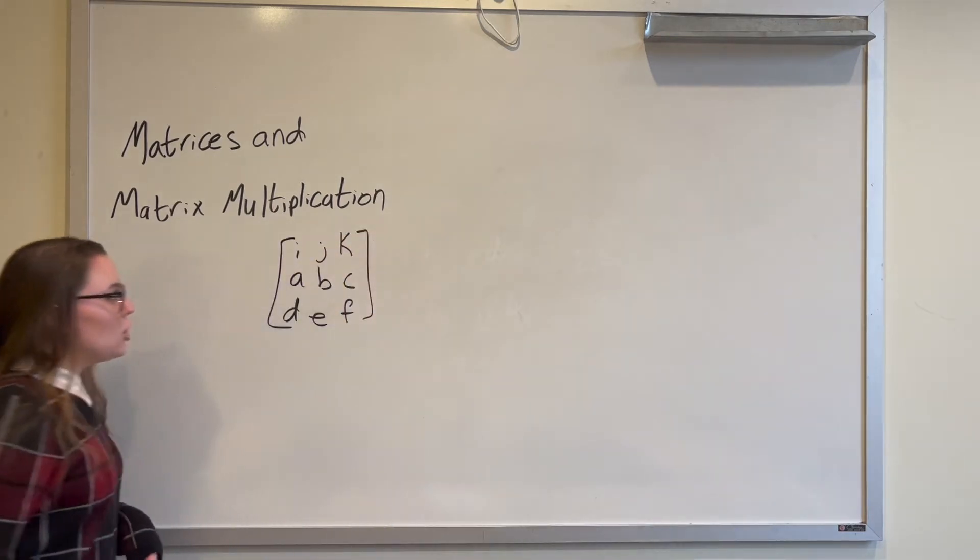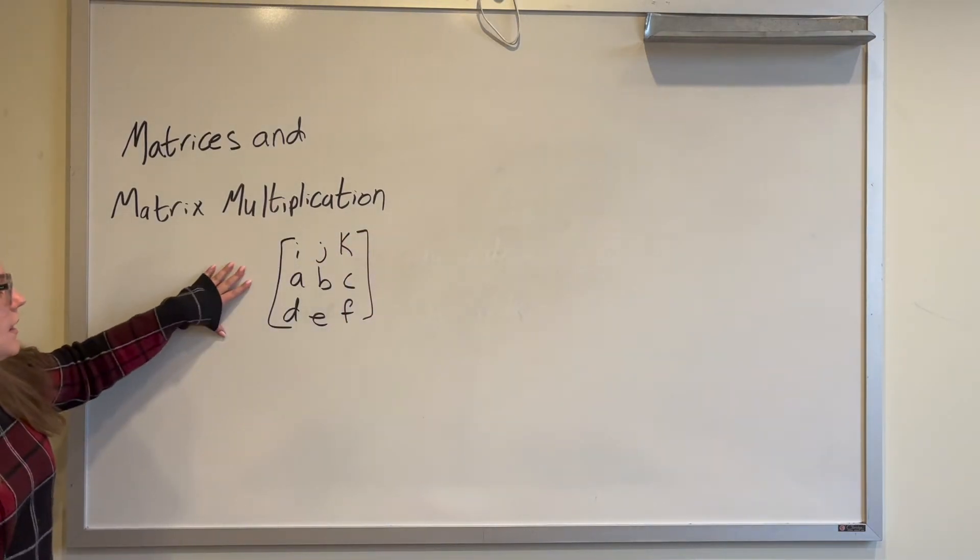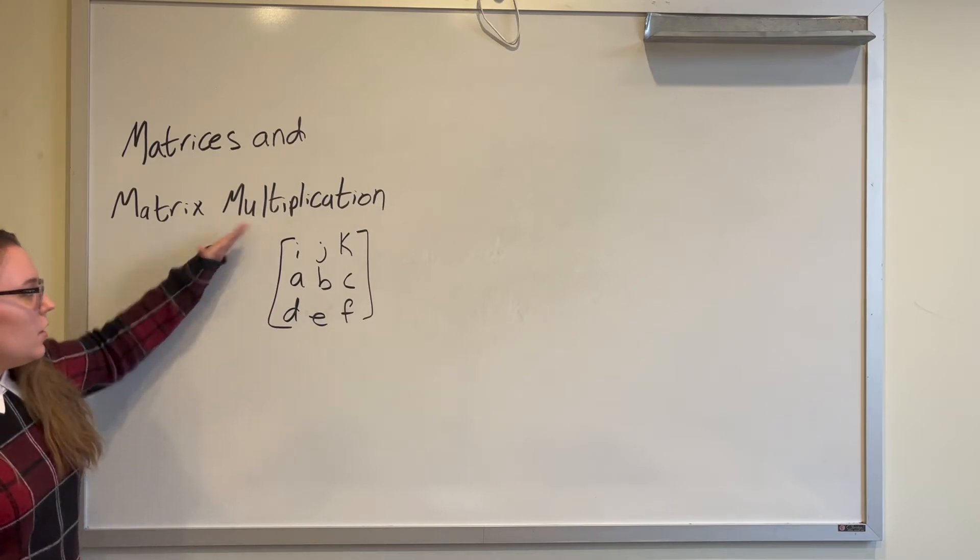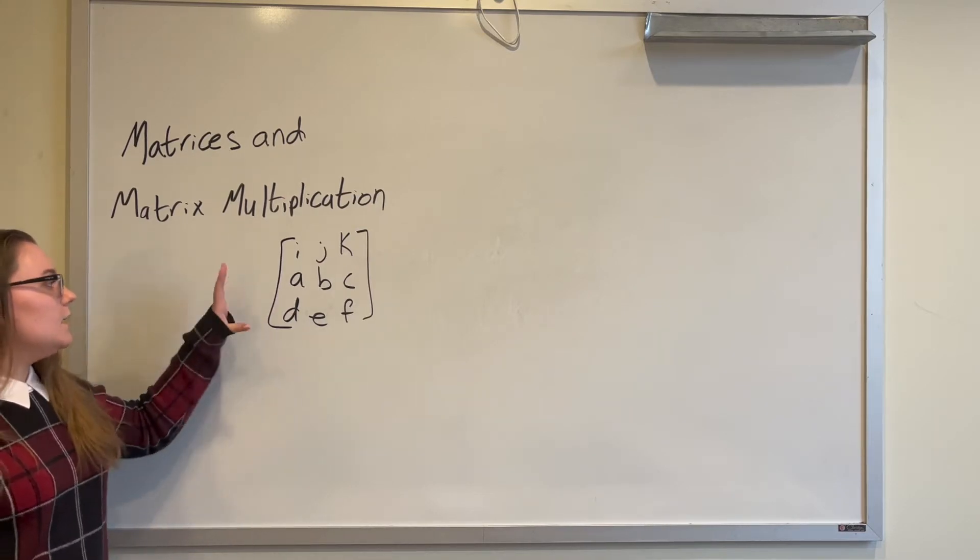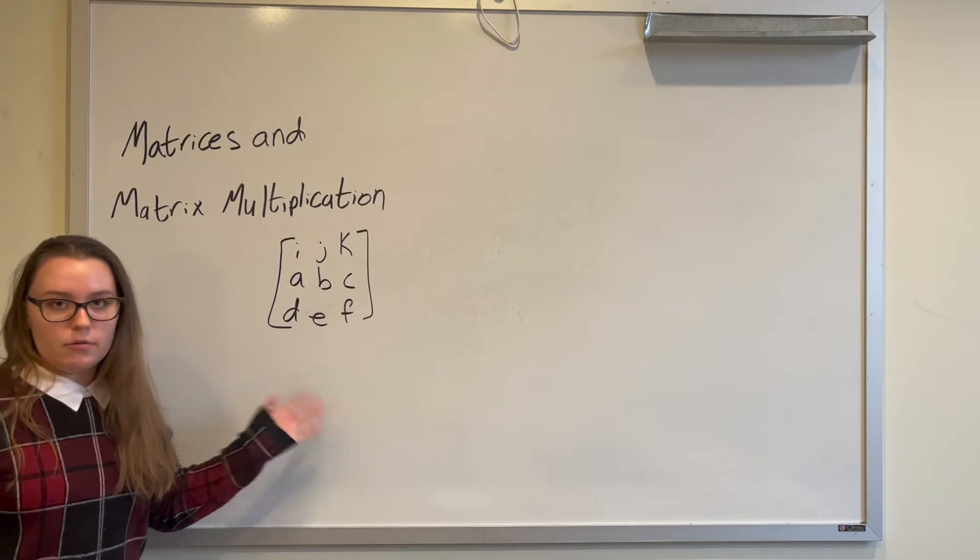So the first thing that you need to know about a matrix is that it looks a little something like this. It has however so many rows, however so many columns, and there is a number in every row and column.